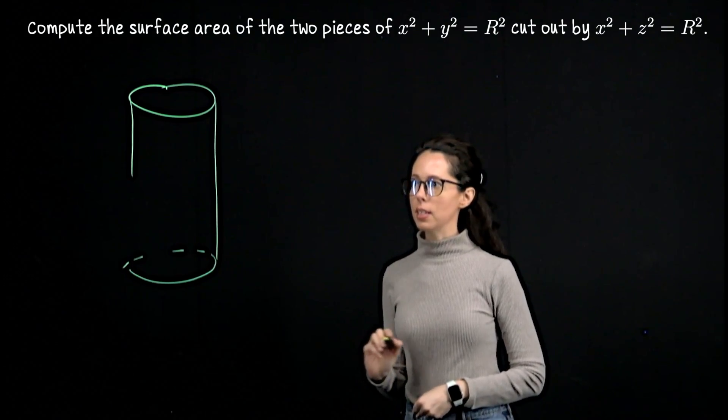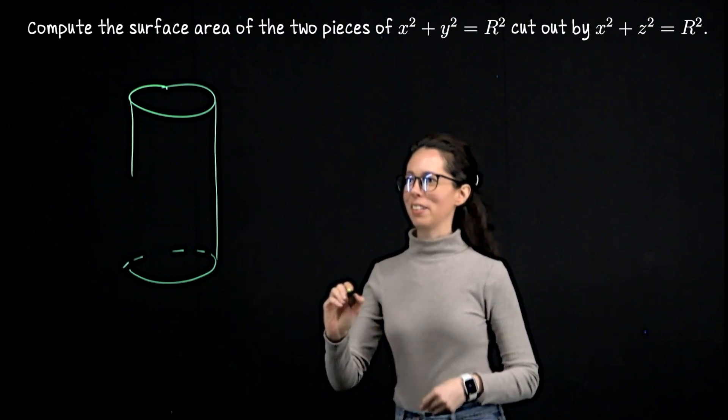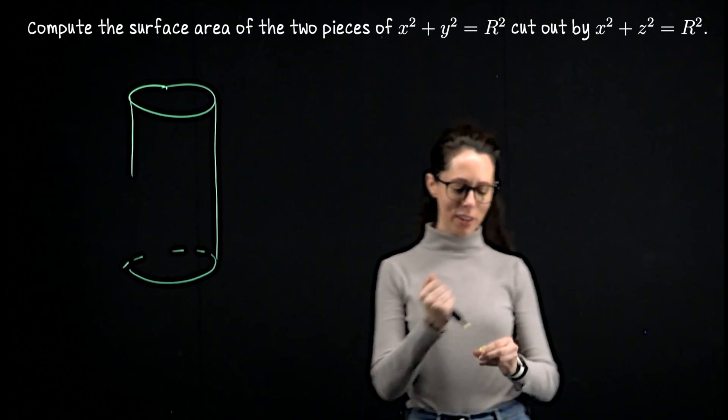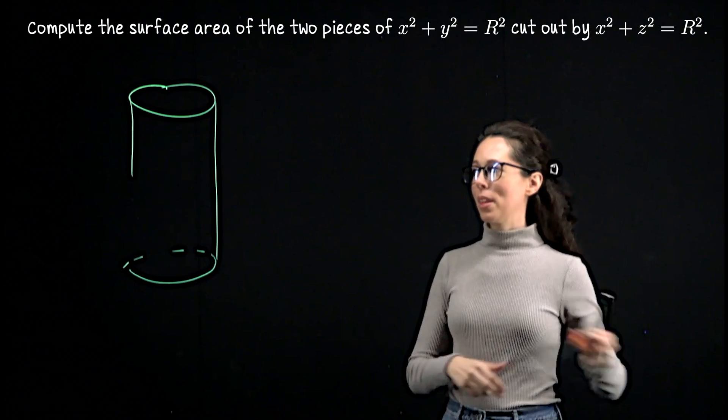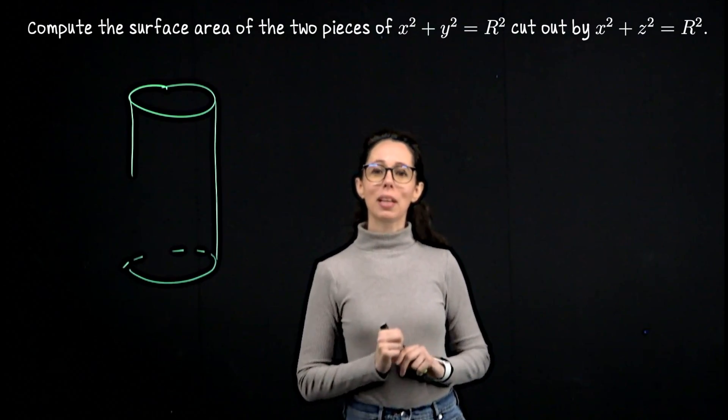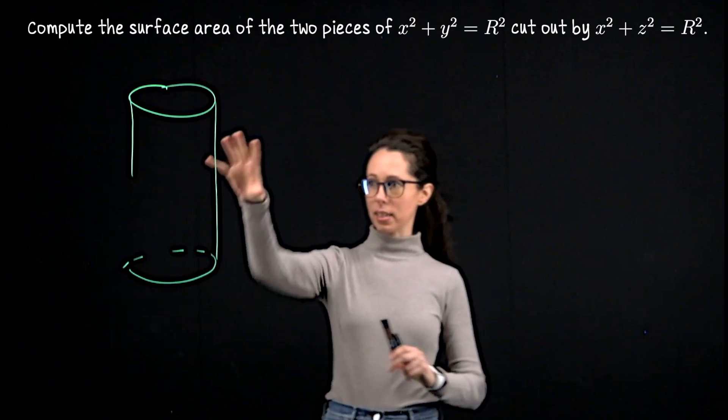So capital R is the radius of the cylinder. And then if I, maybe I didn't do this quite right over here, I want to imagine that the cylinder x squared plus z squared equals R squared is intersecting that.